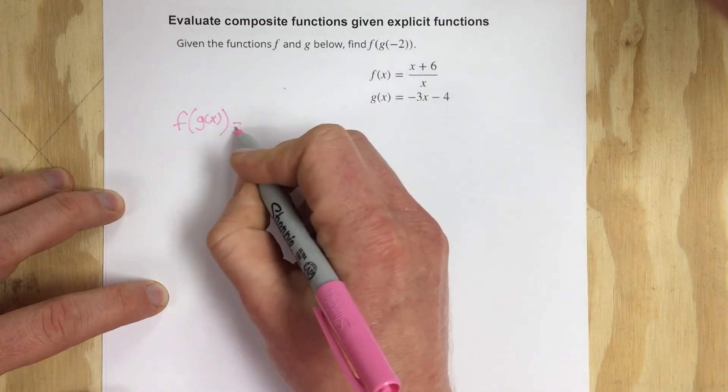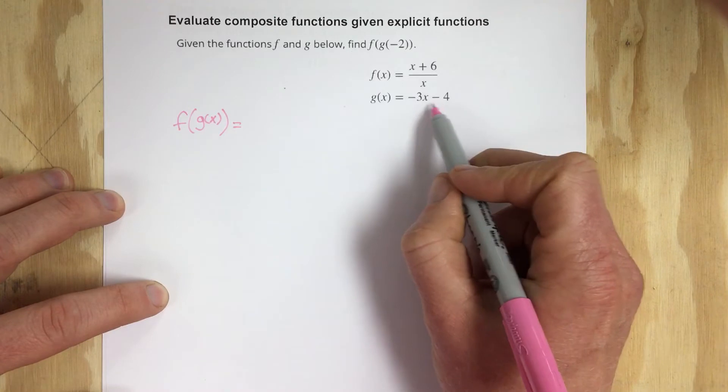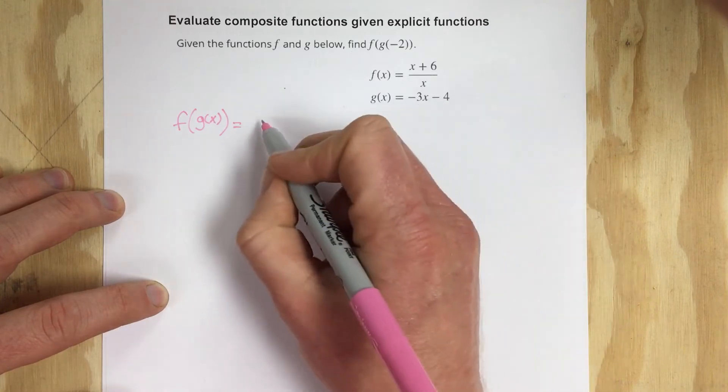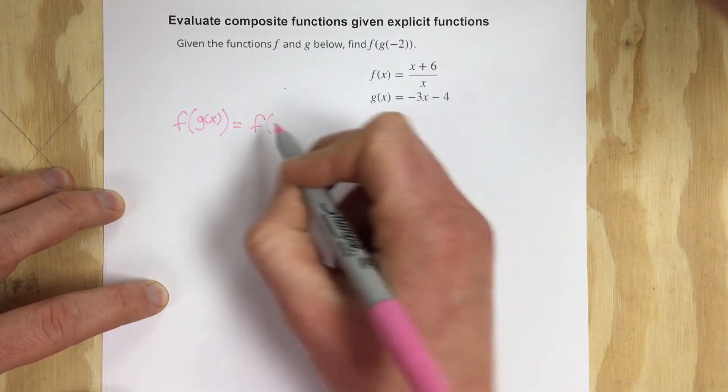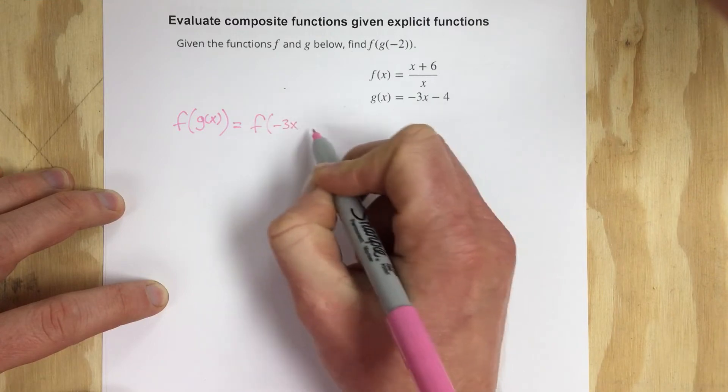And then I'm going to start replacing the g of x with its function which is negative 3x minus 4. So we get f of negative 3x minus 4.